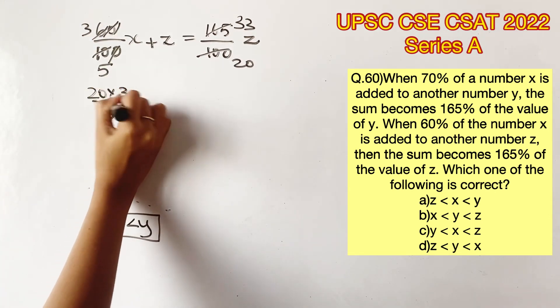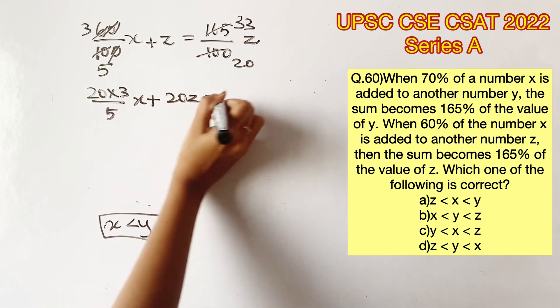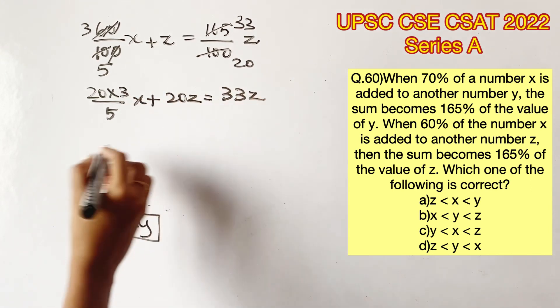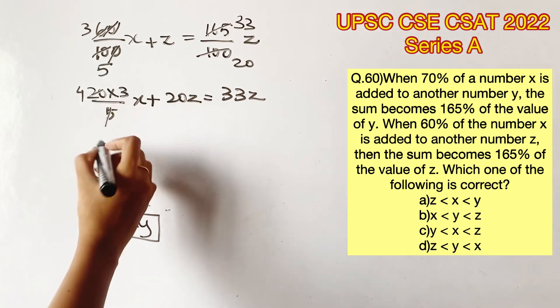Multiplying throughout with 20, we get 20 into 3 by 5 x plus 20 z is equal to 33 z, which will be 12x is equal to 13z.